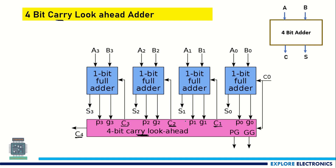In the carry look ahead diagram you can see P0 G0, P1 G1, P2 G2 and P3 G3 signals. These are two extra signals: P is the propagate signal and G is the generate signal. By using these propagate and generate signals we can pass a carry to the next block. Let us understand what propagate and generate signals are.